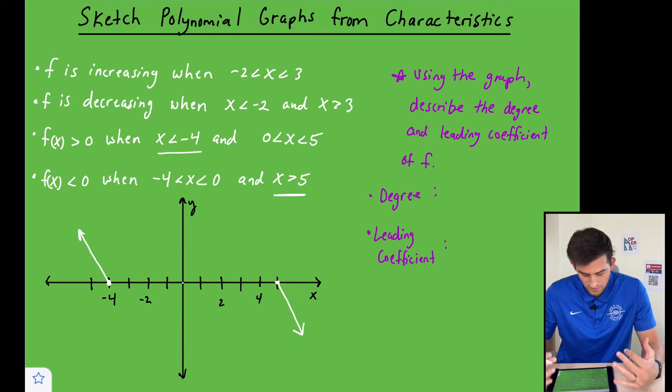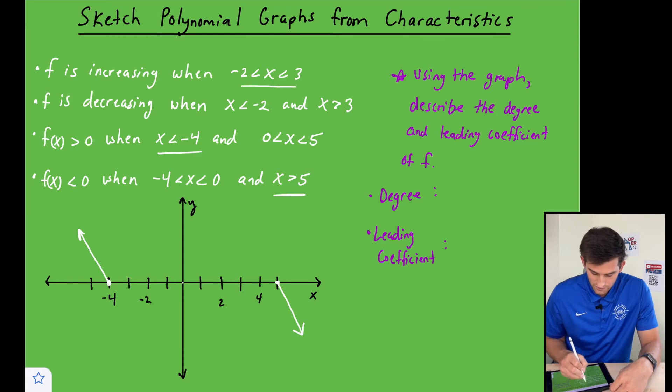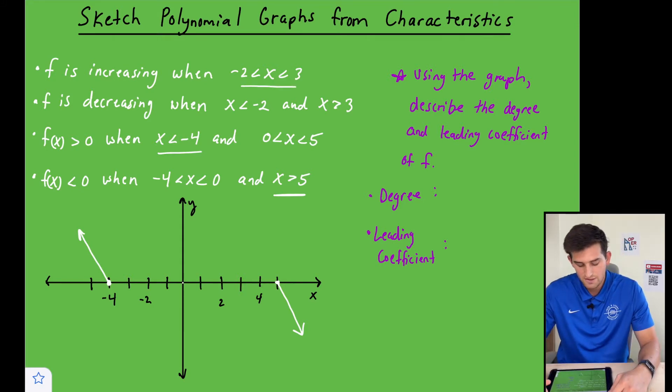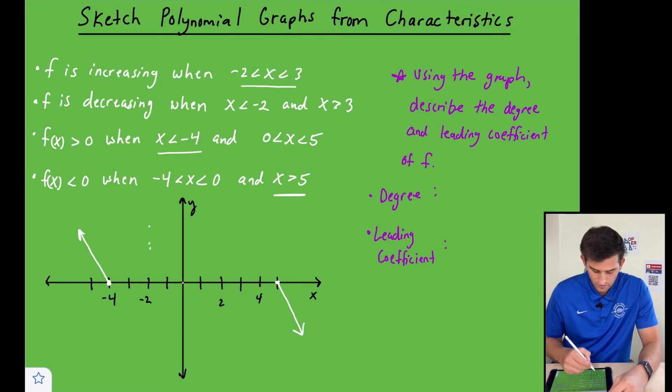So now let's think about some of these other characteristics that they've given us. Let's talk about this first one right here. So we have f is increasing when x is between negative two and three. So between negative two and three, so right here would be negative two and right there would be three. So we don't really know how high our graph is going to go yet here at three.